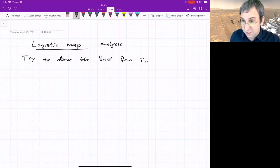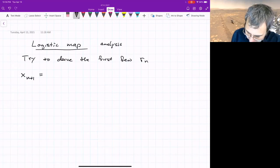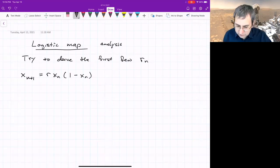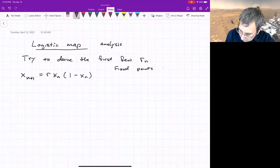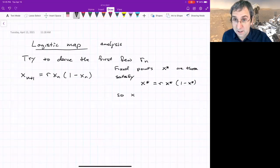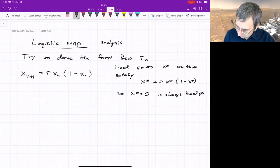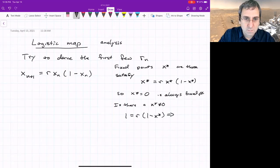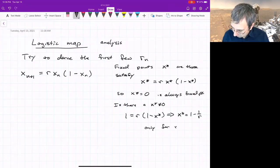Remember the logistic map x_{n+1} = r*x_n*(1 - x_n). We can rewrite this to look for fixed points x* that satisfy x* = r*x*(1 - x*). So x*=0 always satisfies that. Is there a time when it's not zero? We can divide both sides by x*, assuming it's non-zero, equal to r*(1 - x*).